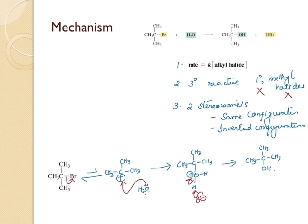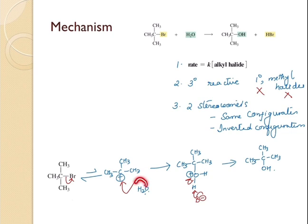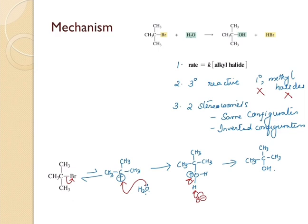Suppose if you start with an alcohol halide where this carbon is a chiral center, then it can lead to the formation of two stereoisomers, because the nucleophile can attack in either direction due to the planar nature of the carbocation. But for this particular reaction, since there is no chiral center, there are no stereochemical implications, and therefore it is just going to lead to the formation of only one product.